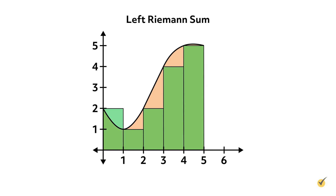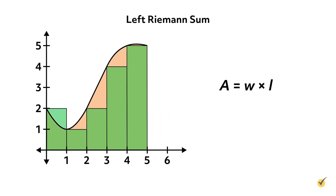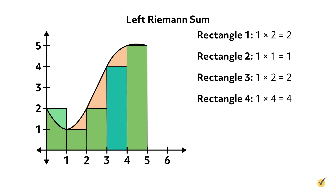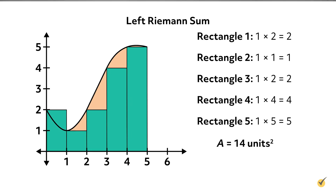Let's find each of the rectangle's areas now. Remember, the area of a rectangle equals its width times its length. In this example, each rectangle has a width of 1. The first rectangle is 2 units tall, so its area is 1 times 2, which equals 2. The next rectangle is 1 unit tall, so its area is 1 times 1, which equals 1. The third rectangle is 2 units tall, so it has an area of 2. The fourth rectangle is 4 units tall, with an area equal to 4. And the fifth rectangle is 5 units tall, so its area is equal to 5. Adding all of these together, we have a total area of 14 square units. Just like that, we have made an approximation for the area beneath the curve.